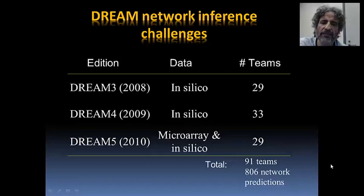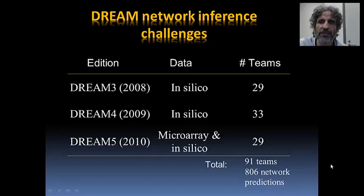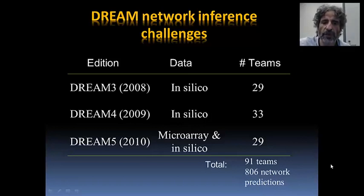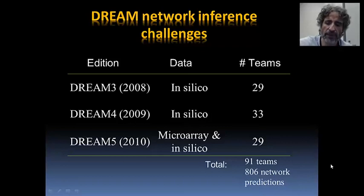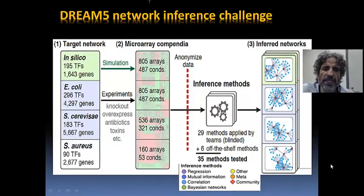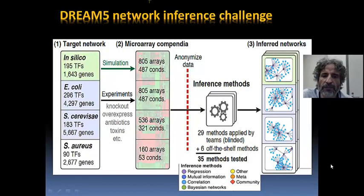We did these kinds of challenges over the last four or five years. In DREAM 8, we finished one challenge on signaling network inference. DREAM followed by a number means the edition of challenges. We did a network inference challenge in 2008, 2009, and 2010 — in DREAM 3. In total, we had on the order of a hundred teams predicting on the order of a thousand networks, and we learned quite a few things about network inference.